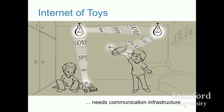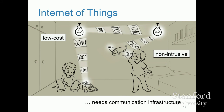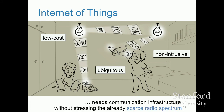The problems you have to solve in this case are very similar to Internet of Things problems because the requirements are pretty similar. You want to communicate at low cost, be non-intrusive so you don't interfere with the home wireless network, prevent others from interfering with you, and have the solution work everywhere — ideally without using the radio spectrum.